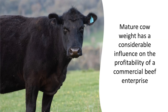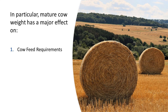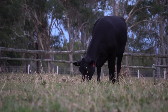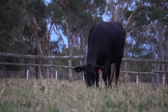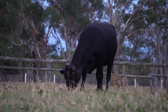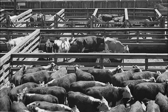Mature cow weight has a considerable influence on the profitability of a commercial beef enterprise. In particular, mature cow weight has a major effect on cow feed requirements and cow cull values. One of the biggest expenses incurred by beef producers is the cost of feeding the cow herd, with larger cows requiring more feed to maintain condition and typically being more expensive to maintain than their more moderately sized counterparts. However, with the salvage price of cull cows being predominantly determined by live weight, heavier cull cows are generally more valuable than lighter cows. Achieving a balance between cow feed requirements and cull cow values is an important consideration for many beef producers.